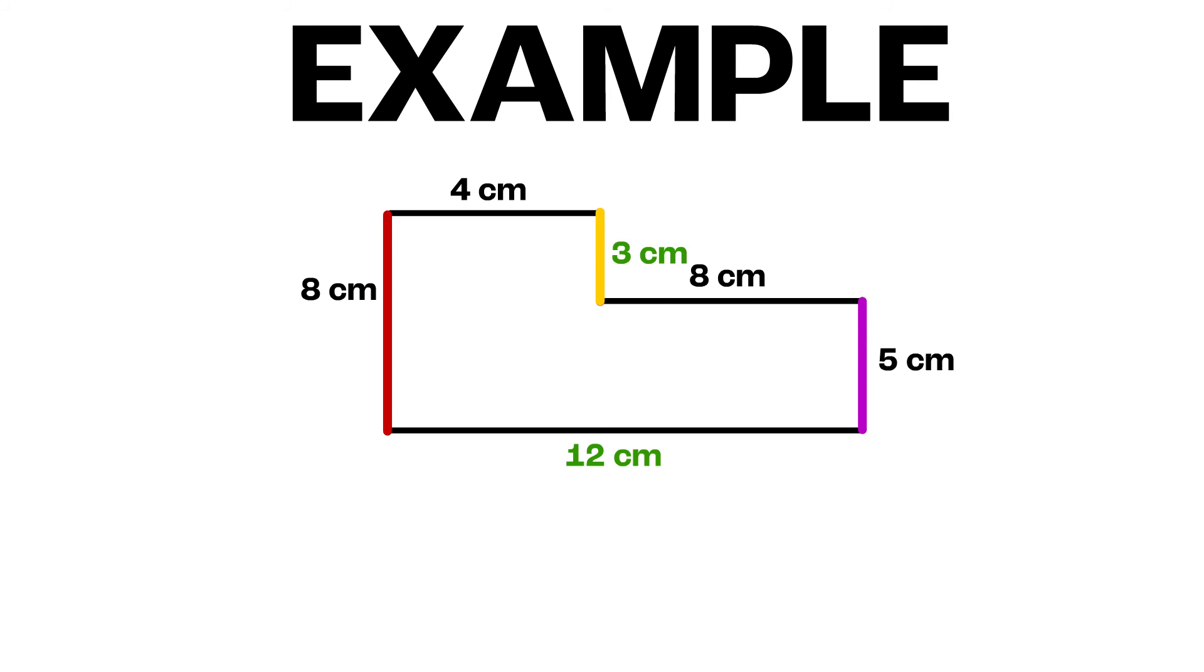Okay, so now we have all of our side lengths. Let's go add them up to find out what our perimeter is. 12 plus 3 plus 5 plus 8 plus 4 plus 8 is equal to 40 centimeters. So, the perimeter of the shape is 40 centimeters.